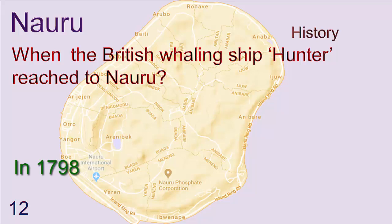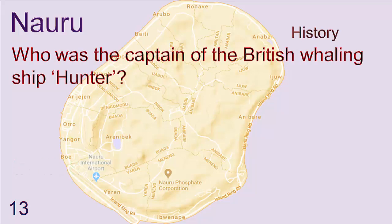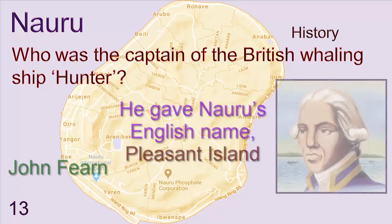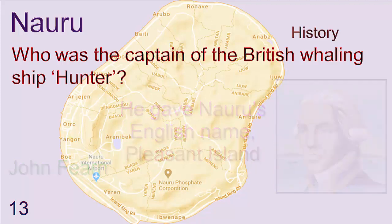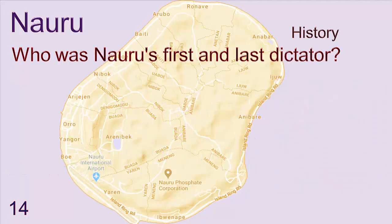In 1798, who was the captain of the British whaling ship Hunter? John Fearn. He gave Nauru its English name, Pleasant Island. Who was Nauru's first and last dictator? John.